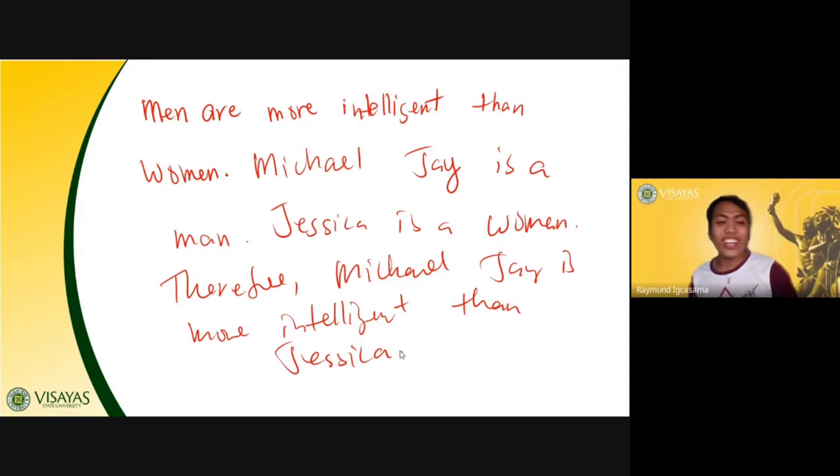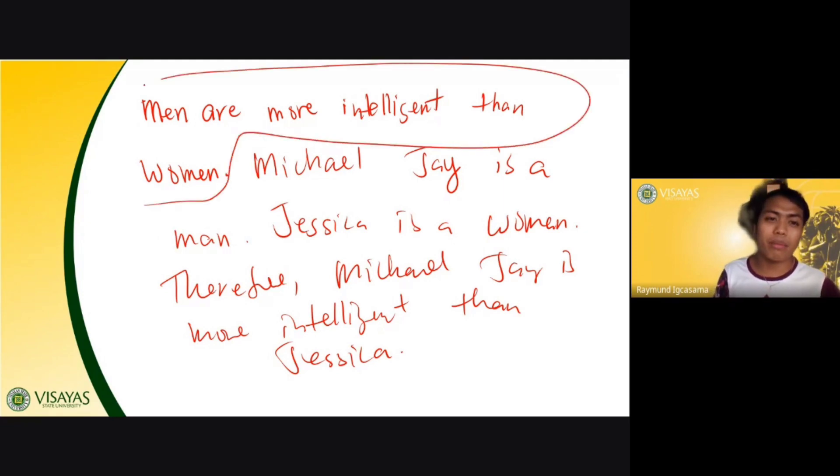Jessica, answer. So that's it, right? So you are given a general statement or universal statement, then you provide specific statements or examples or scenarios. So that's deductive reasoning.